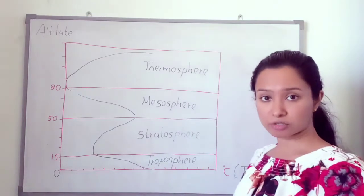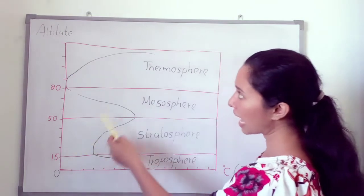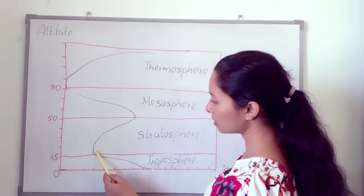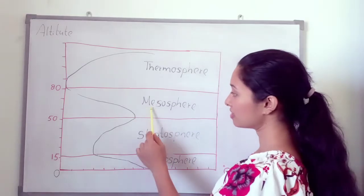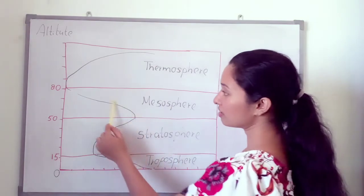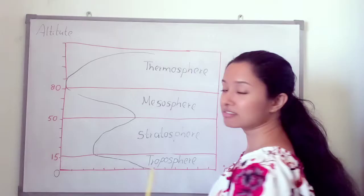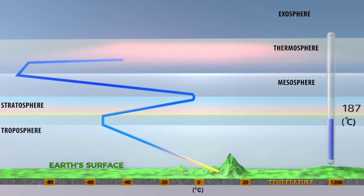In the stratosphere, altitude increases up to about 50 kilometers, but temperature also increases. In the mesosphere, temperature decreases as altitude increases. And in the thermosphere, temperature increases again. So temperature behavior differs according to the layer.